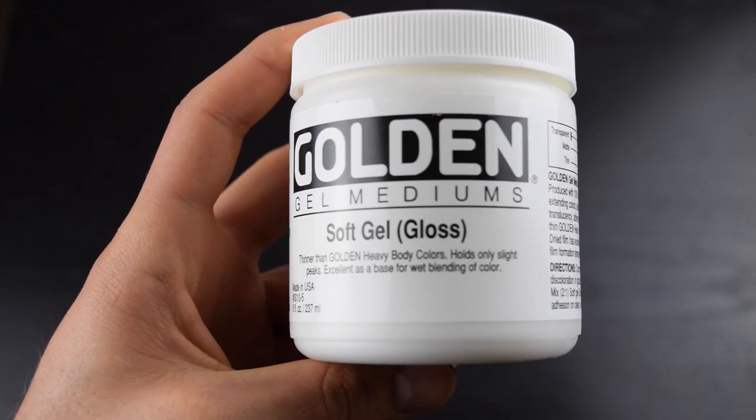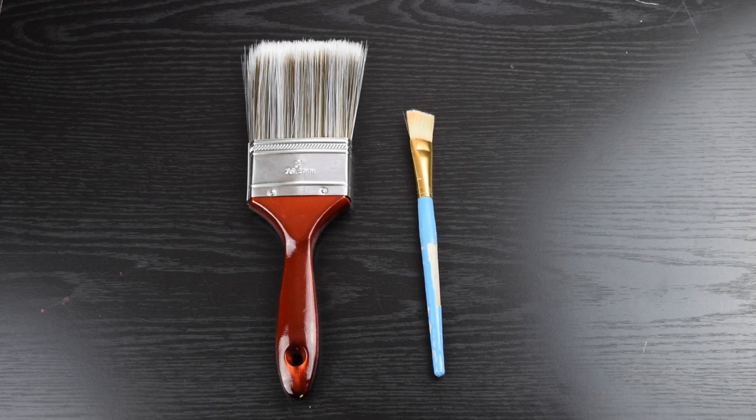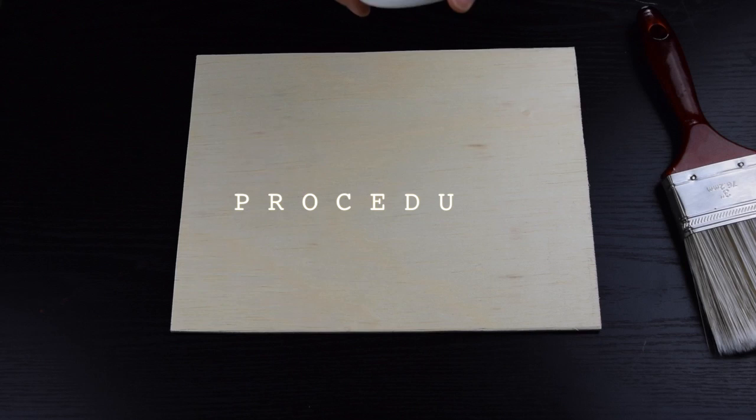You're going to need some gel medium which will help your picture adhere to the wood and will help the ink set in. And then of course your brushes so you can apply the gel medium onto the wood, and some Mod Podge which will help set in the ink and prevent it from smearing.